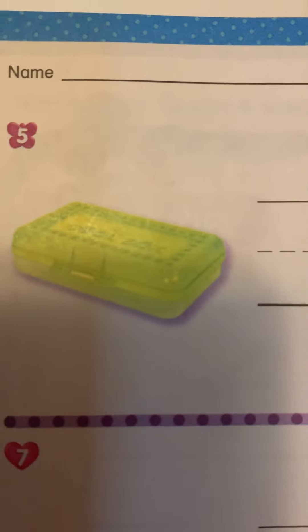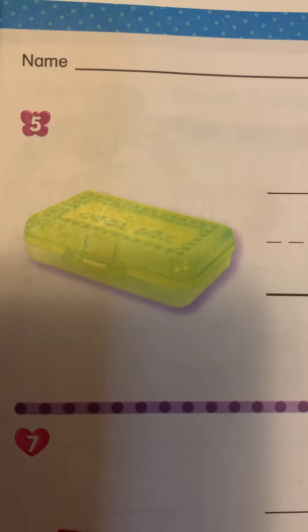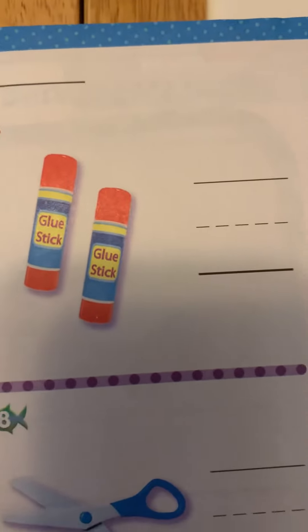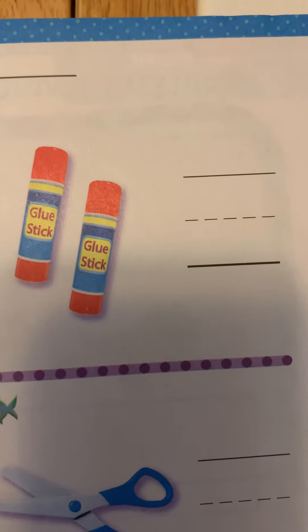Now let's look at this one. Okay, there are how many boxes? One. Everybody write the number one. How many glue sticks? Two. Write the number two.